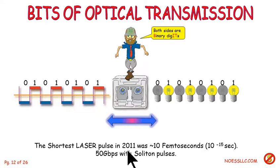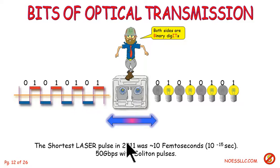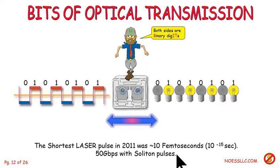The shortest laser pulse in 2011 was measured in femtoseconds — they're talking about soliton pulses. It's a really short pulse of light with this almost magical property: the trailing edge of the pulse moves faster than the leading edge, so it basically overruns itself.